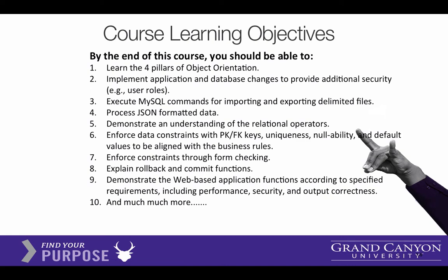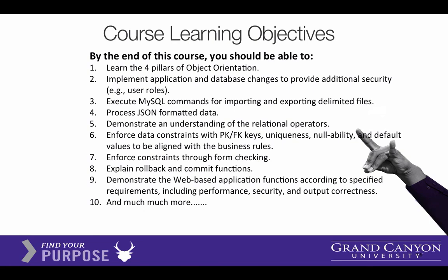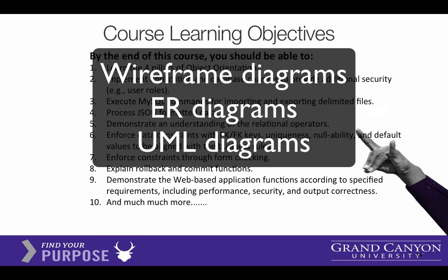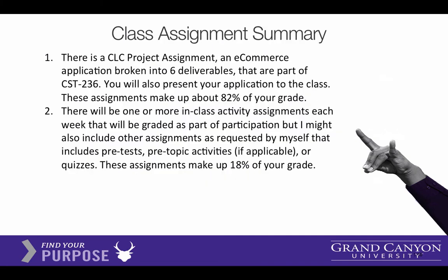Number nine is a big objective: demonstrate web-based application functions according to specified requirements. That means we're going to be designing our site rather than just mimicking a site. We'll create wireframes, designs for our database before we create it, and document our object-oriented classes, so our application will be better quality. The majority of your grade — 82% — will come from our milestone applications. It's important that you create quality work and keep up, because every milestone depends on the previous. We'll also be doing in-class activities that are more step-by-step and very guided.